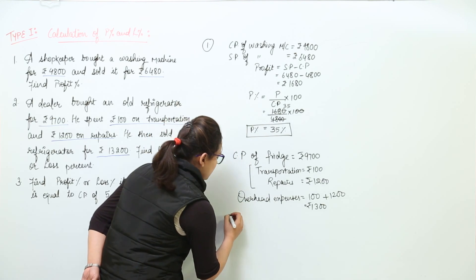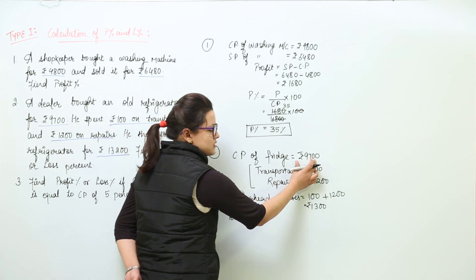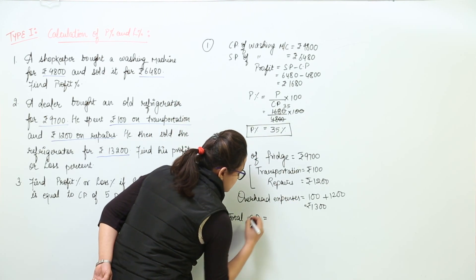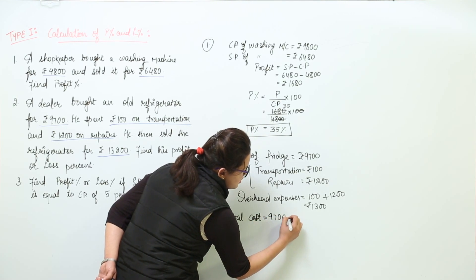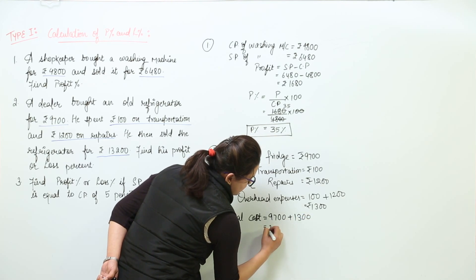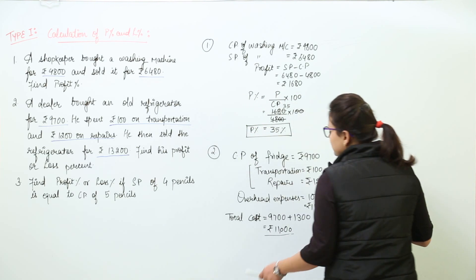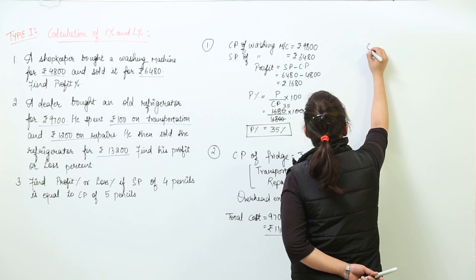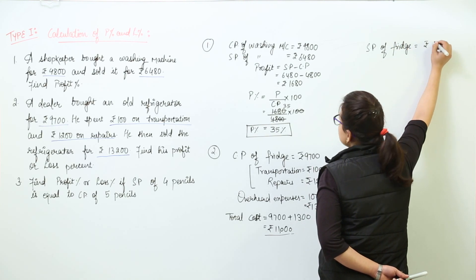The total cost price equals the original cost price plus overhead expenses, that is 9700 plus 1300, giving us rupees 11000 as the total cost of the fridge. The selling price of the fridge is given as rupees 13200.